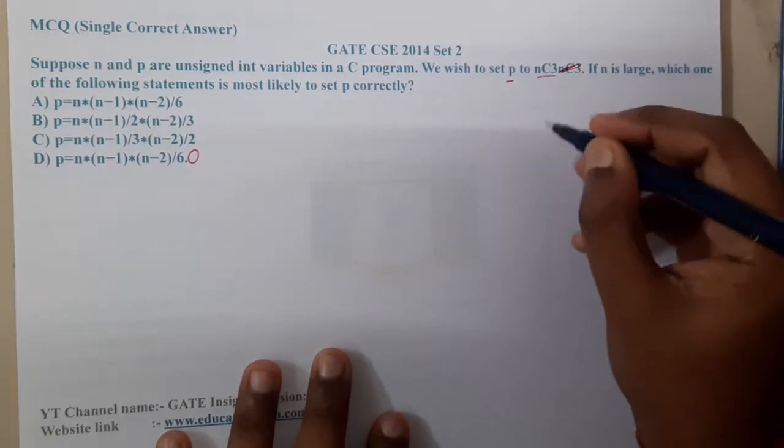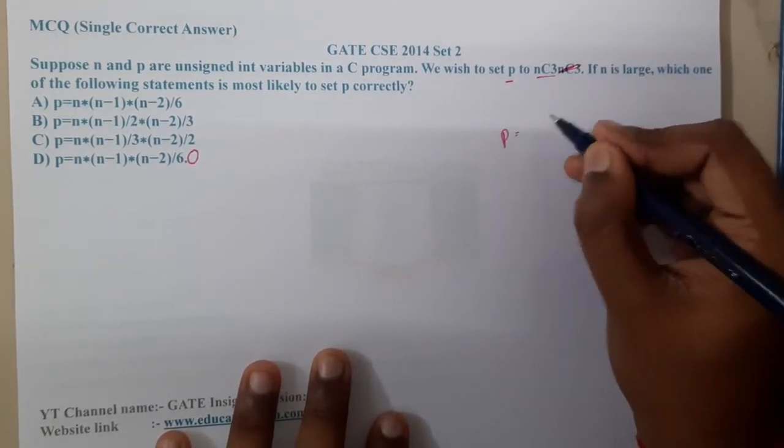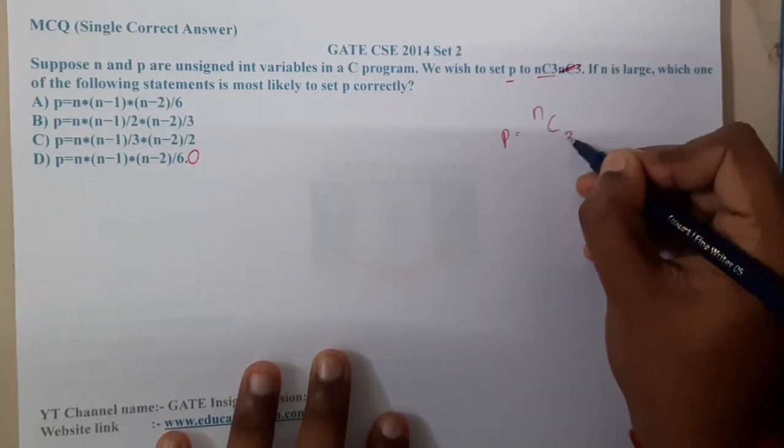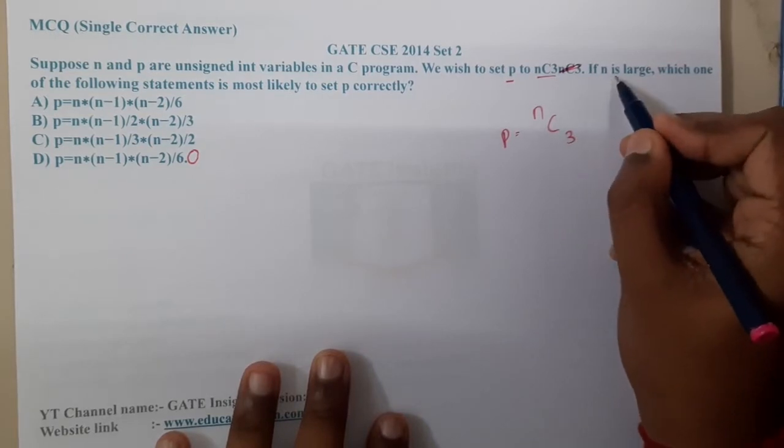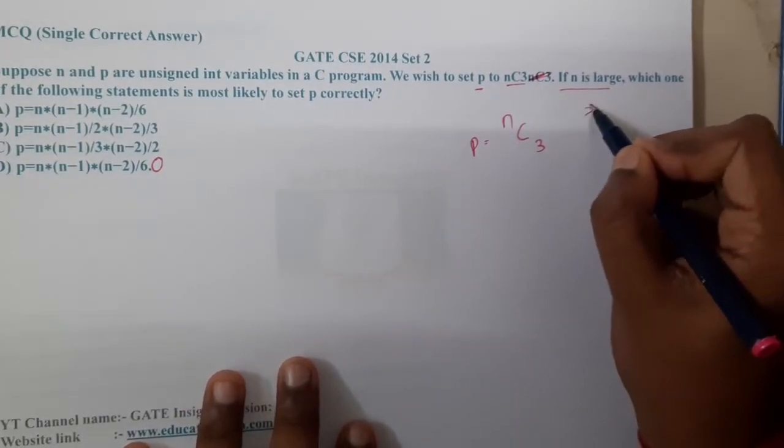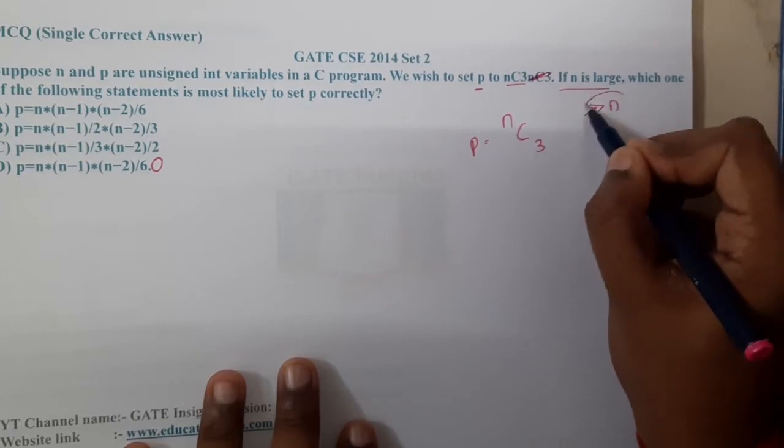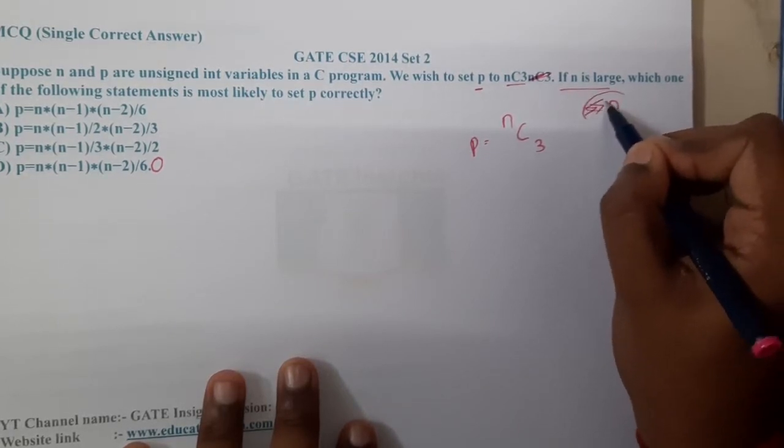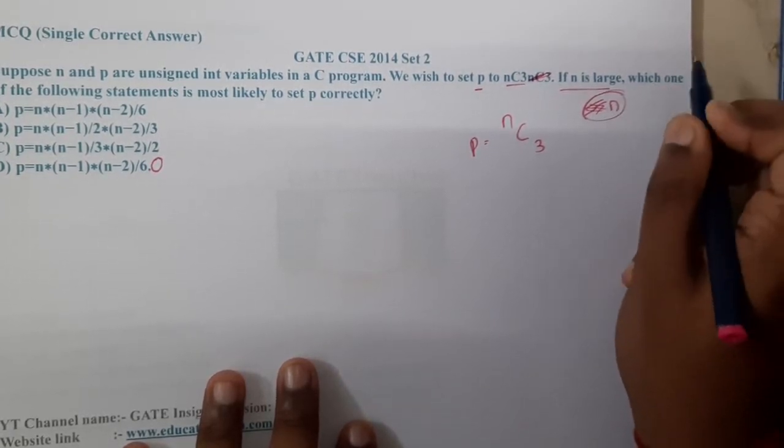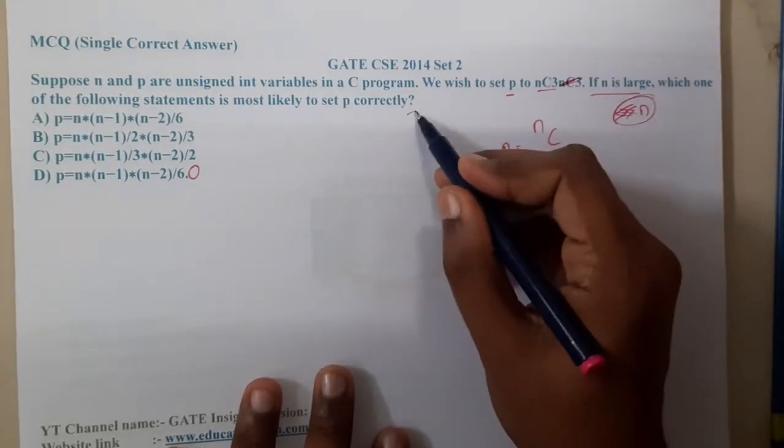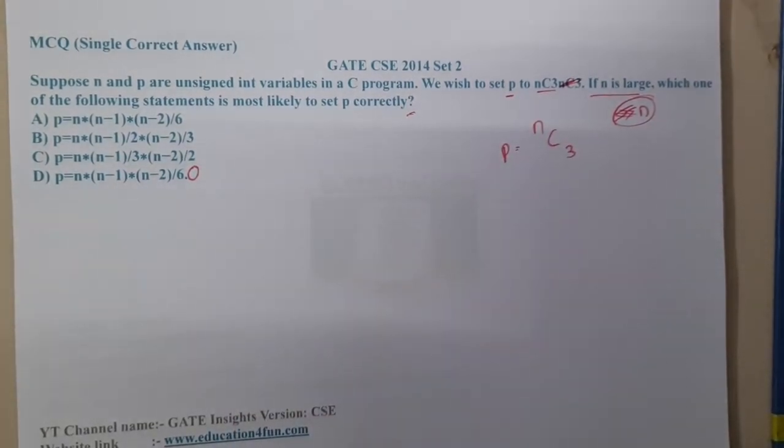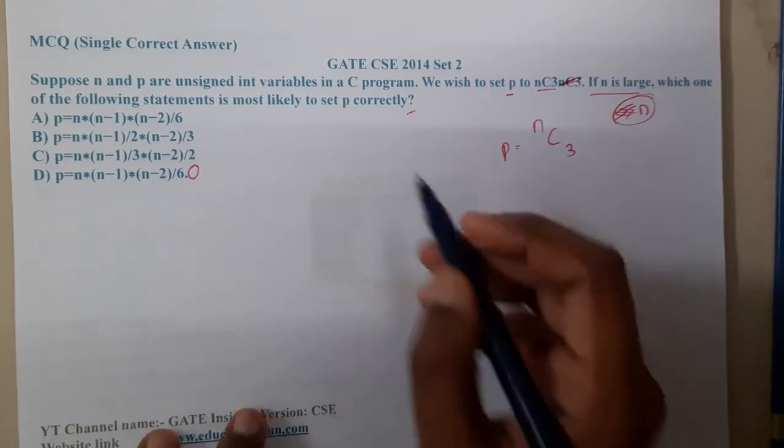We want to set p to nC3. Basically, we want to equate p to nC3 value. If n is large, we are trying to check the values for very, very large values of n. Which one of the following statements will be correct?